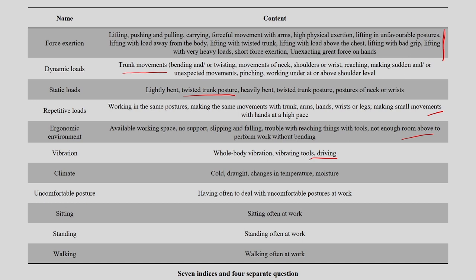Climate covers extreme environmental conditions — either very hot or very cold — which is going to cause a lot of discomfort, and those things also get evaluated. Uncomfortable posture — sitting in different positions, standing, walking — all those things also need to be captured, and we get an understanding about these factors across the seven indices and 63 questions.